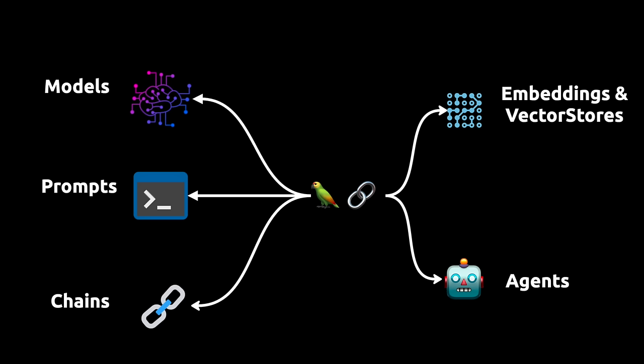There's a lot to unpack in LangChain and new stuff is being added every day. But on a higher level, this is what the framework looks like: we have models or wrappers around models, we have prompts, we have chains, we have embeddings and vector stores which are the indexes, and then we have the agents.